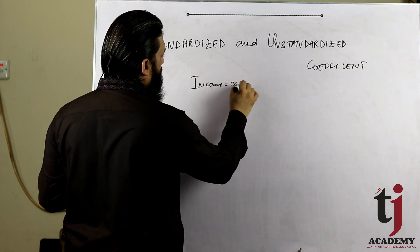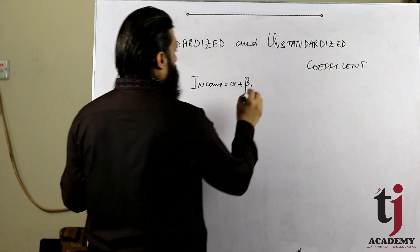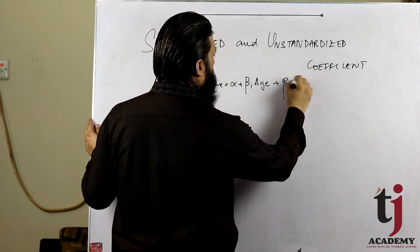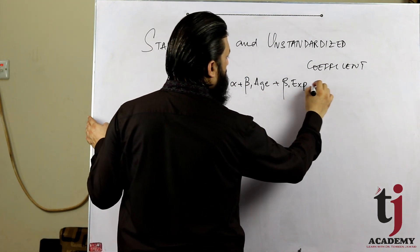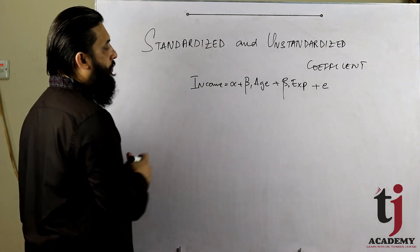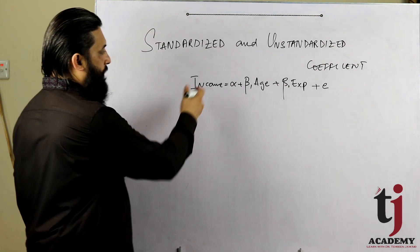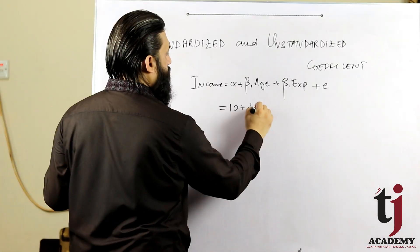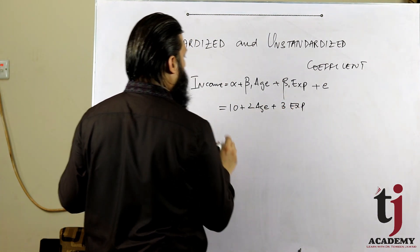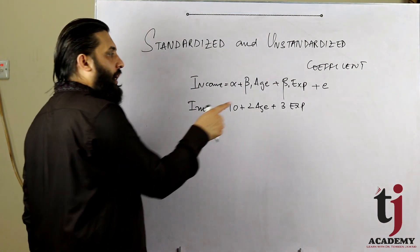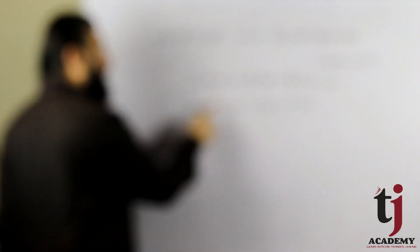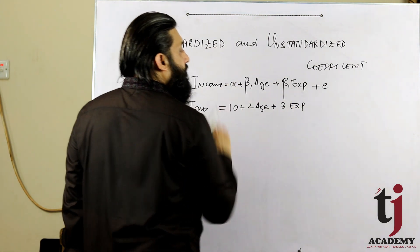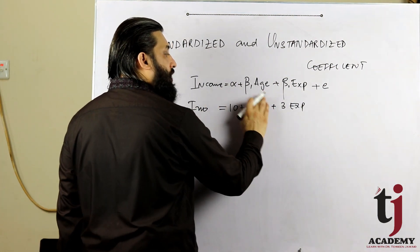Income is the dependent variable, and the model includes age plus experience plus return. If we have a result: income equals age plus experience. If age increases by one unit, then income increases by two units, keeping other factors constant. If experience increases by one unit, then income increases by three units, keeping other factors constant.